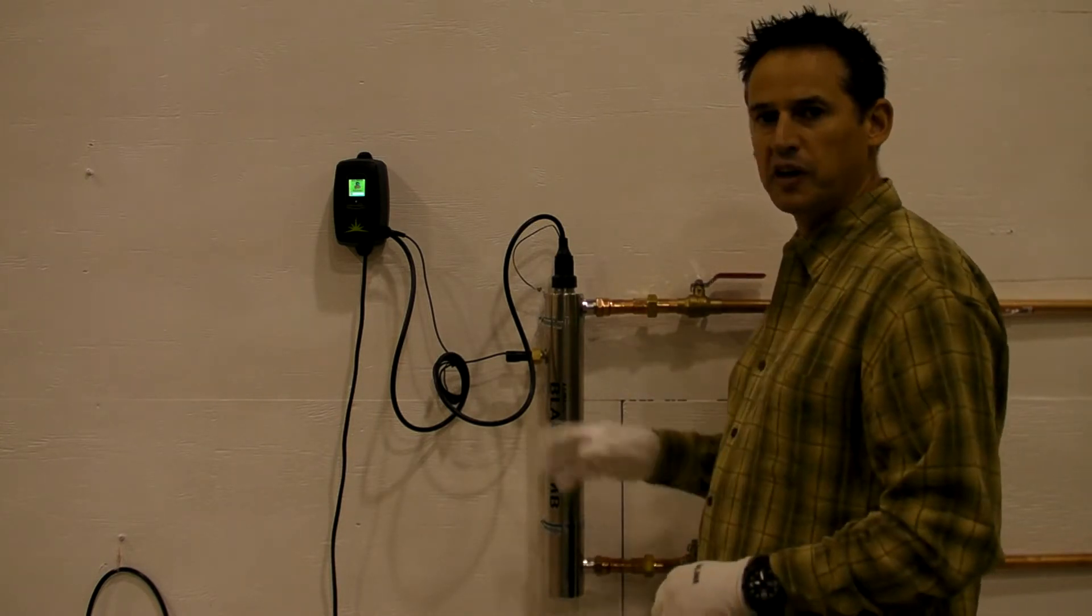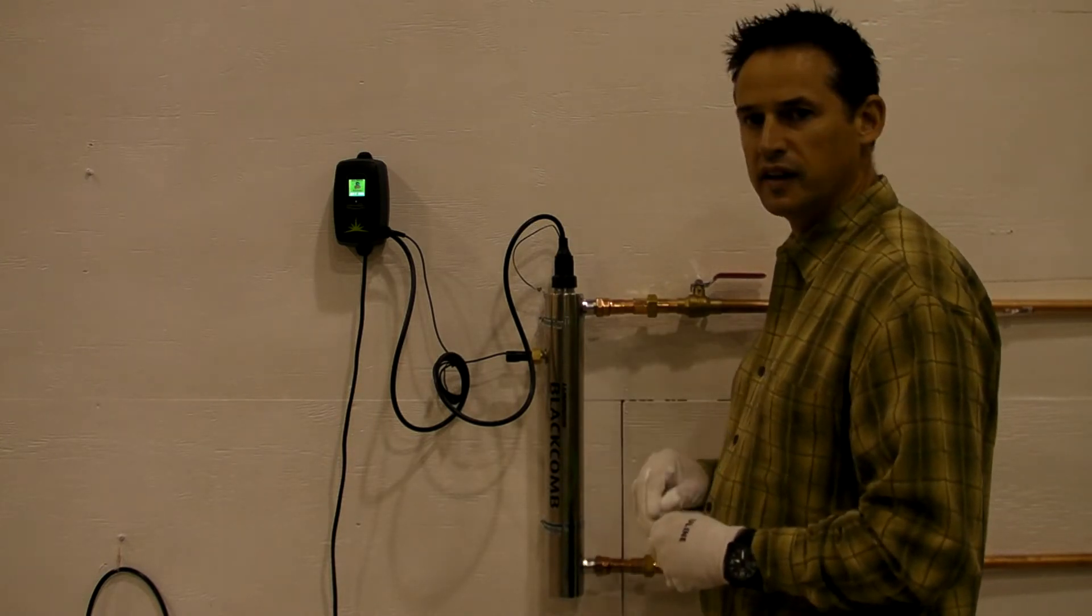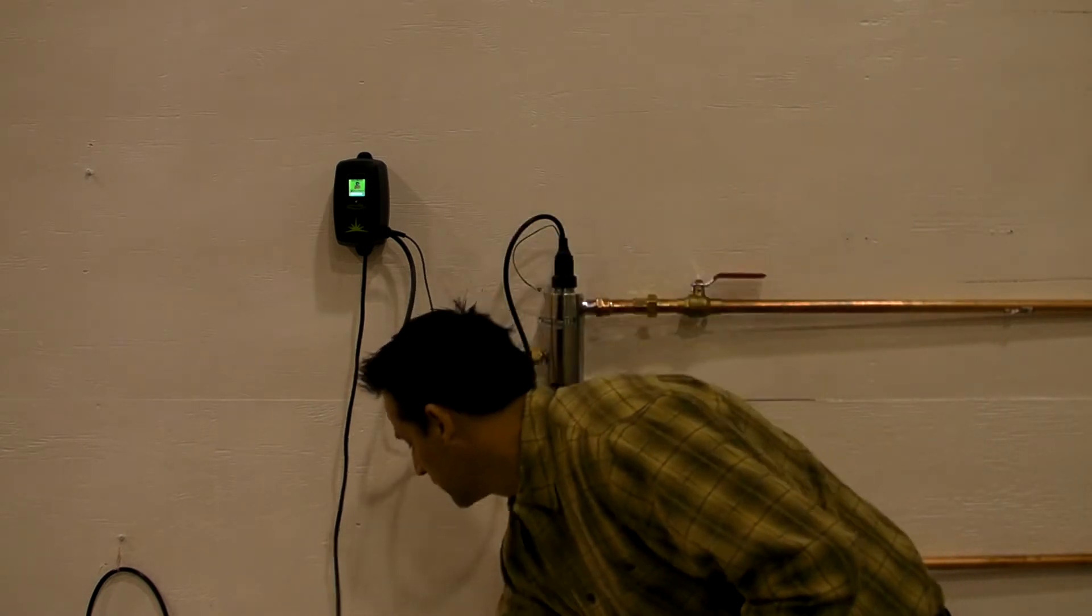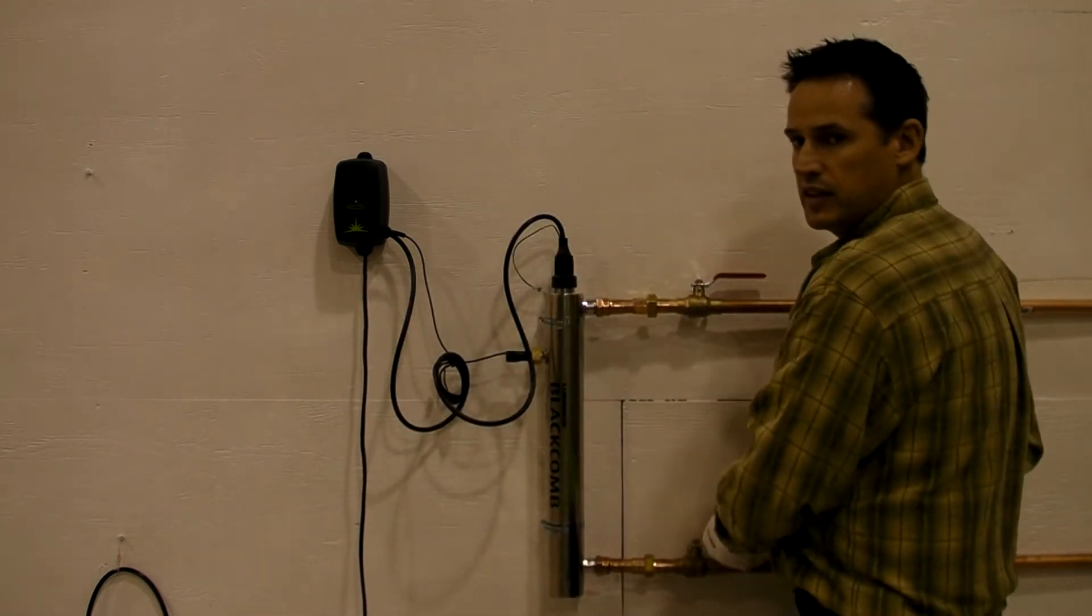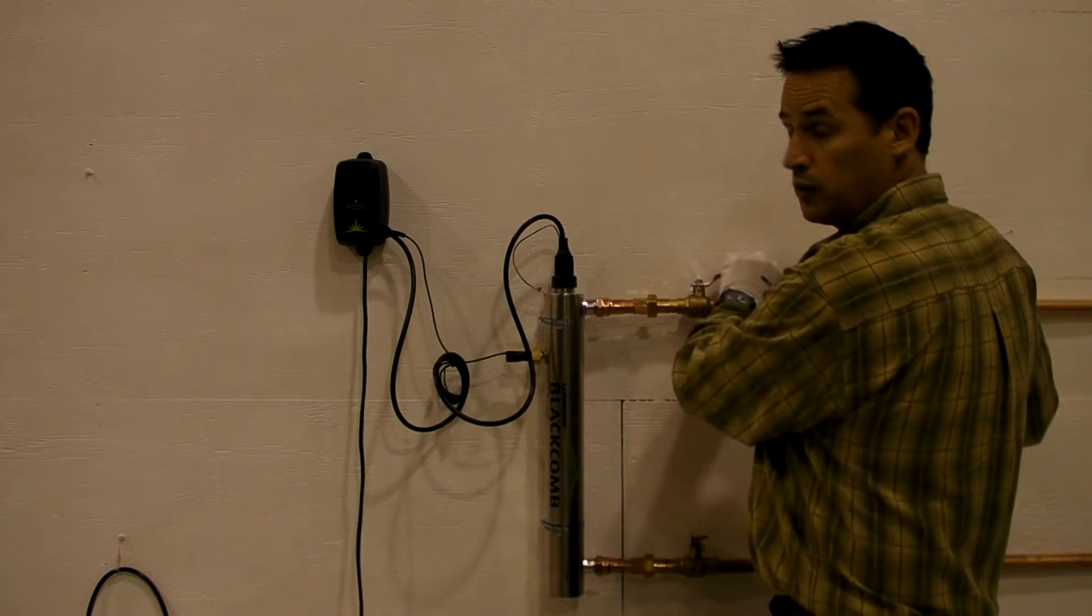The first thing you want to do before working on any UV system is make sure you disconnect the power from the UV system. Next I want to shut off the inlet water supply and the outlet water supply.